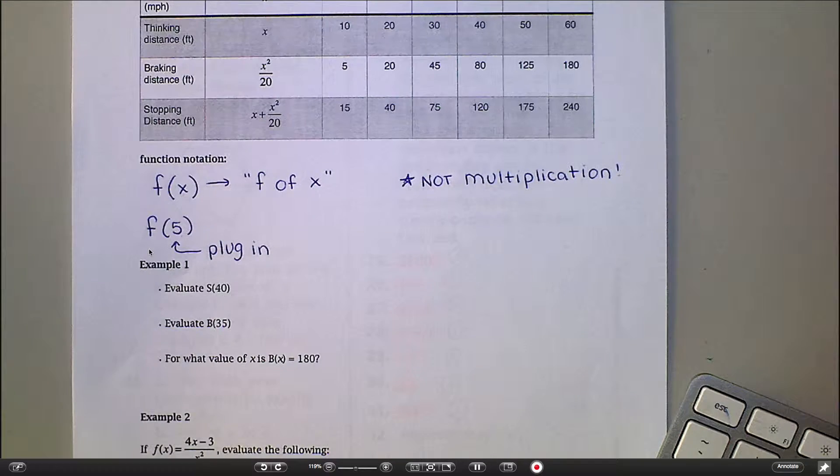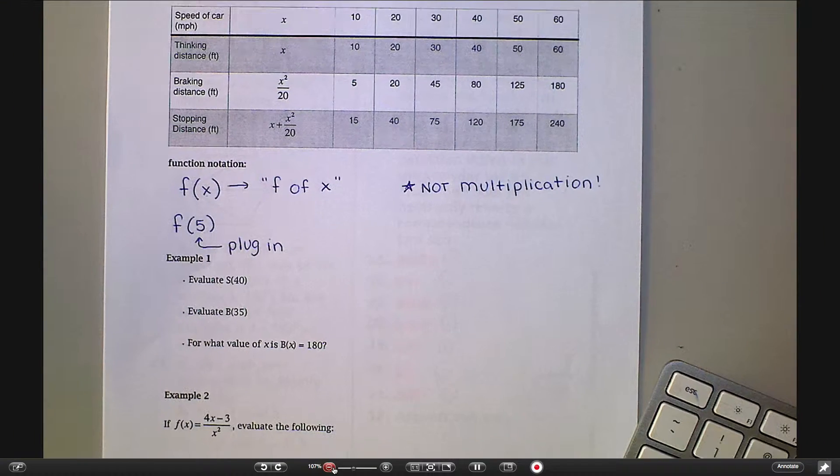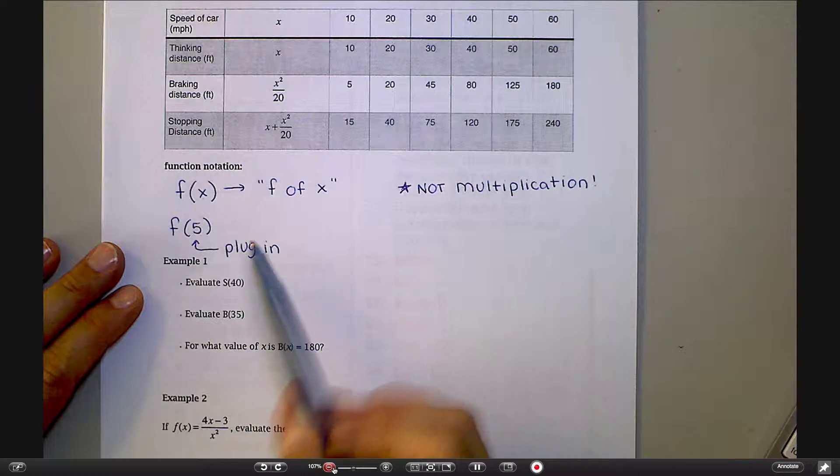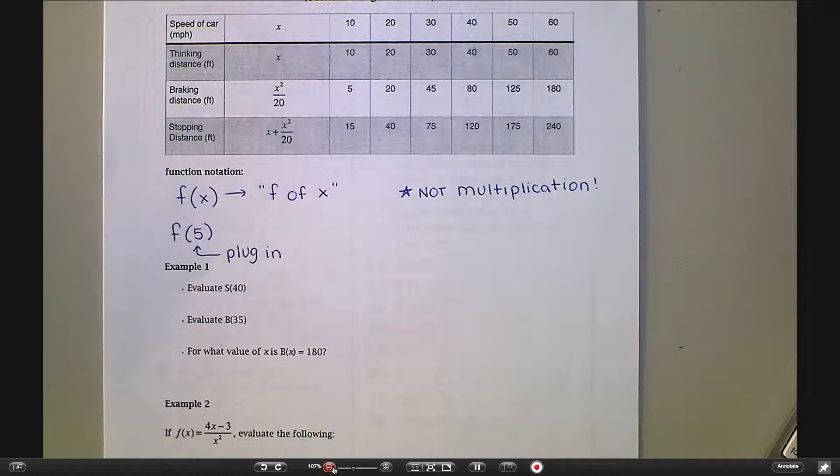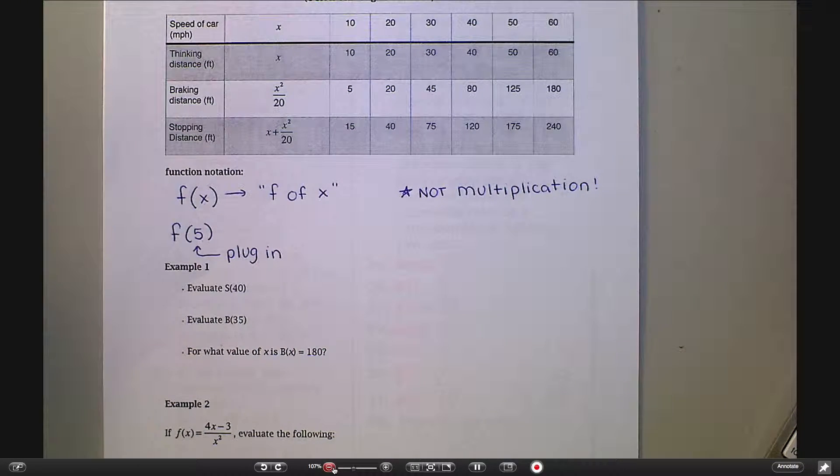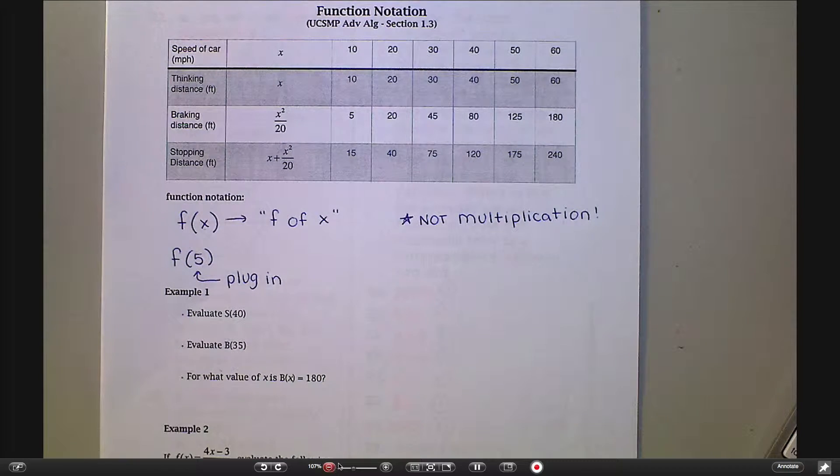When you see something like this, notice how the 5 is in the x spot. What that's really saying is plug this 5 in for x in the equation. That's telling you plug this into whatever the equation says. I'm going to slide this down a little bit so I can see my table at the same time. If you want to take a quick second and just jot down this Example 1 - these three pieces - give you a second to write those down and then we'll talk through them.